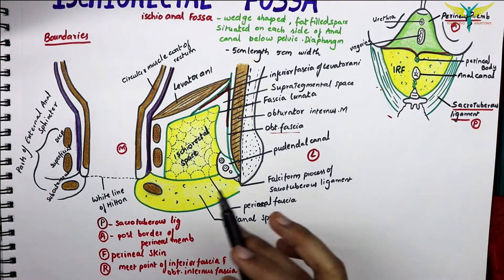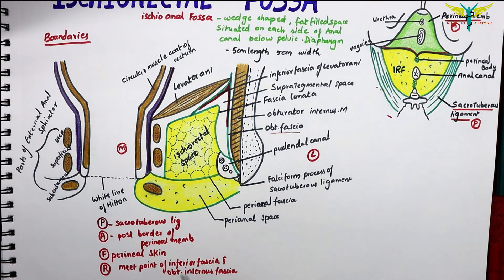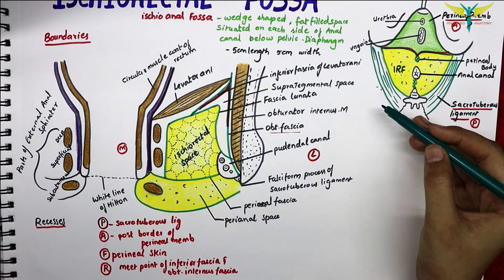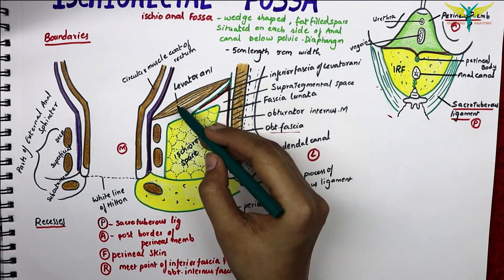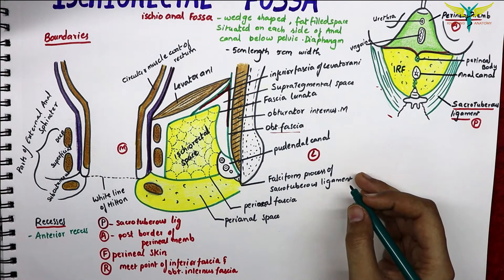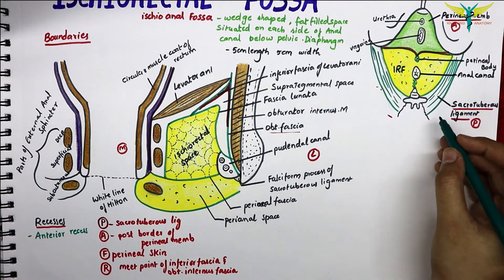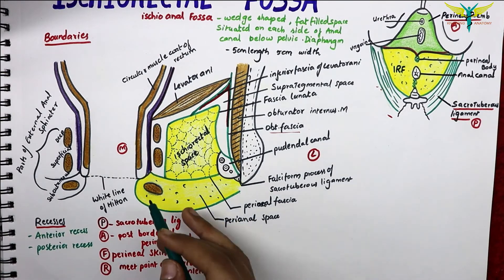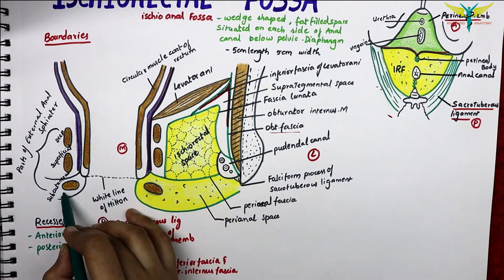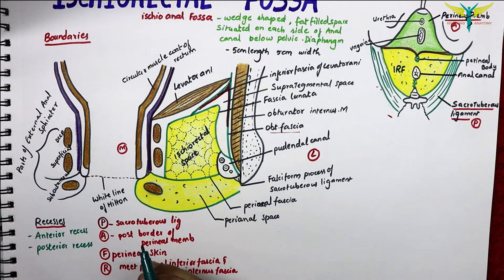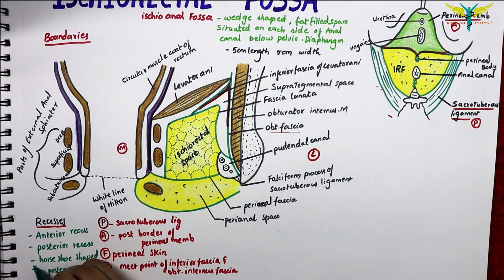Now let's talk about the recesses of the ischiorectal fossa. The ischiorectal fossa extends anteriorly above the urogenital diaphragm, forming the anterior recess, and posteriorly deep to the sacrotuberous ligament, forming the posterior recess. Behind the anal canal, it is continuous with the opposite fossa, forming a horseshoe-shaped posterior recess — this is very important.